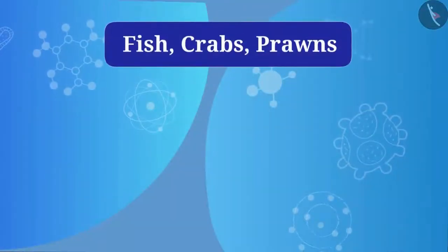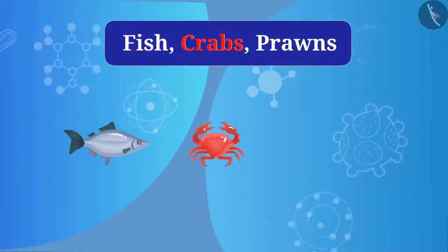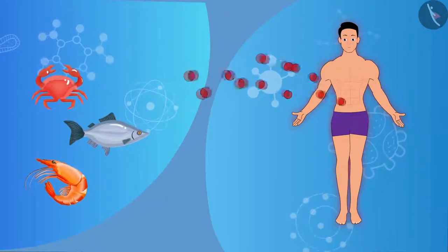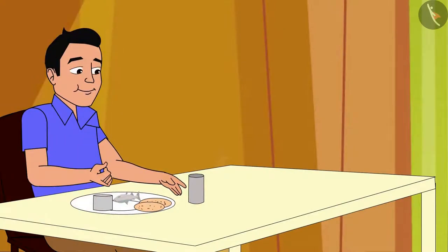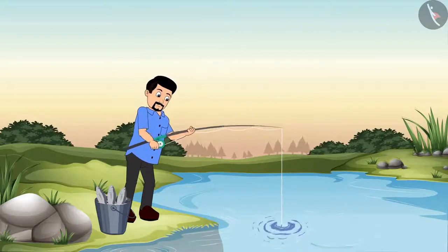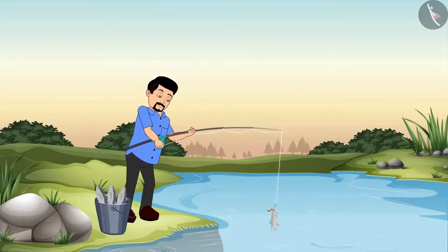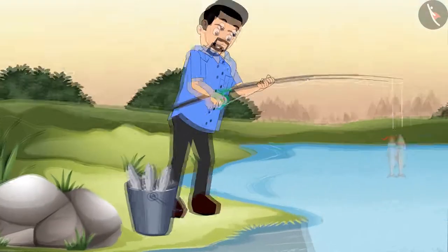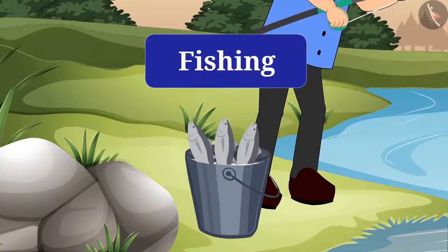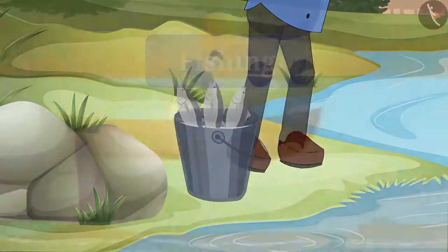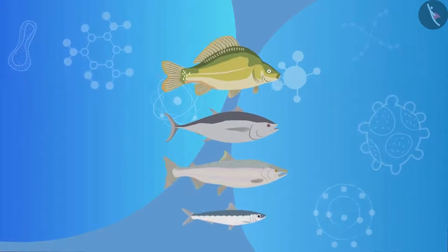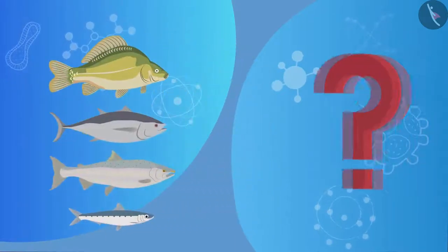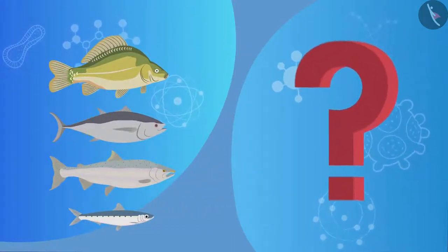Fish, crabs, prawns, etc. are very good sources of protein and are consumed by large sections of the population, especially in coastal regions. Humans catch fish from the sea using nets — this is called fishing. To increase fish production, fish culture is practiced, where selected kinds of fish are grown with care in limited areas of a lake or sea.